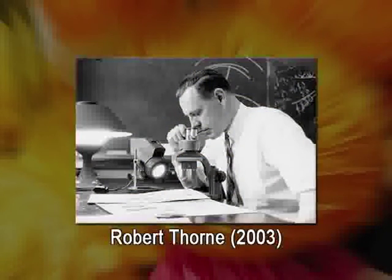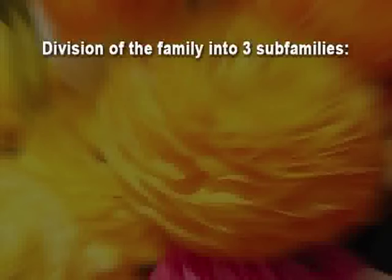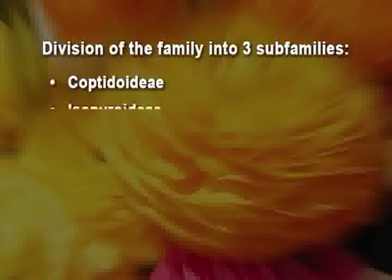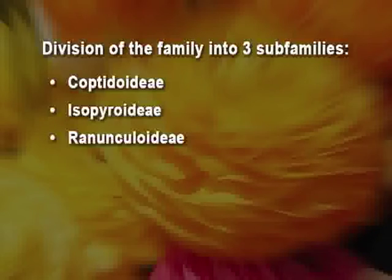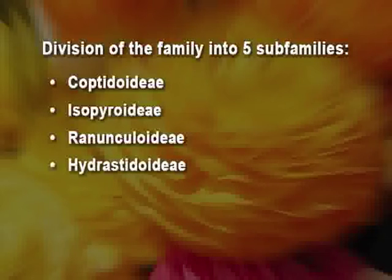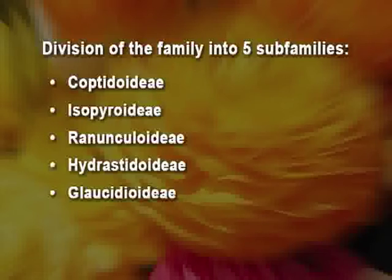Thorne in 2003 divided the family into three sub-families: first, Coptidoideae; second, Isopyroideae; and third, Ranunculoideae. The Angiosperm Phylogeny Group in 2003 recognized two more sub-families — in addition to the previous three, they added Hydrastidoideae and Glaucidioideae. Thus in all, five sub-families are recognized in the family Ranunculaceae.